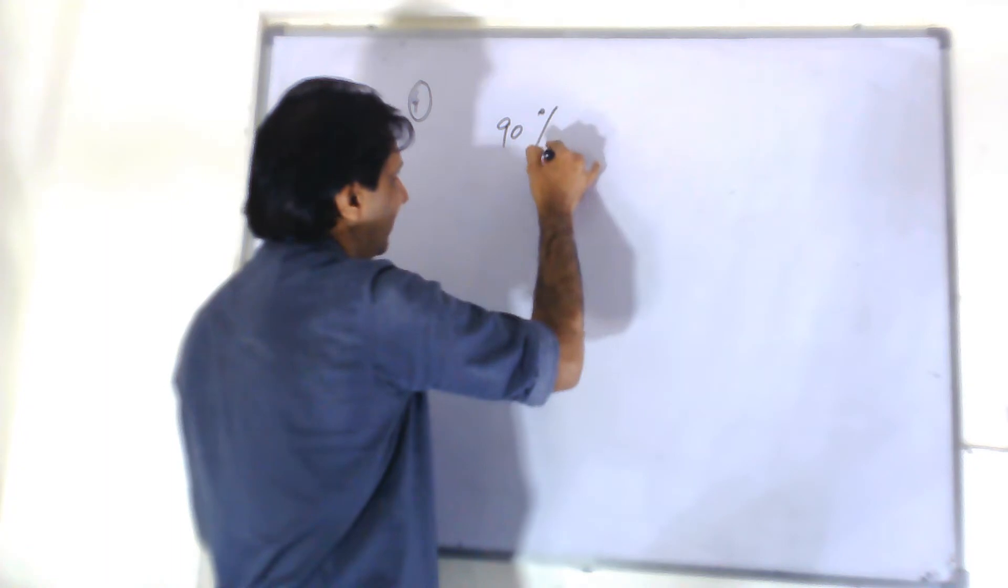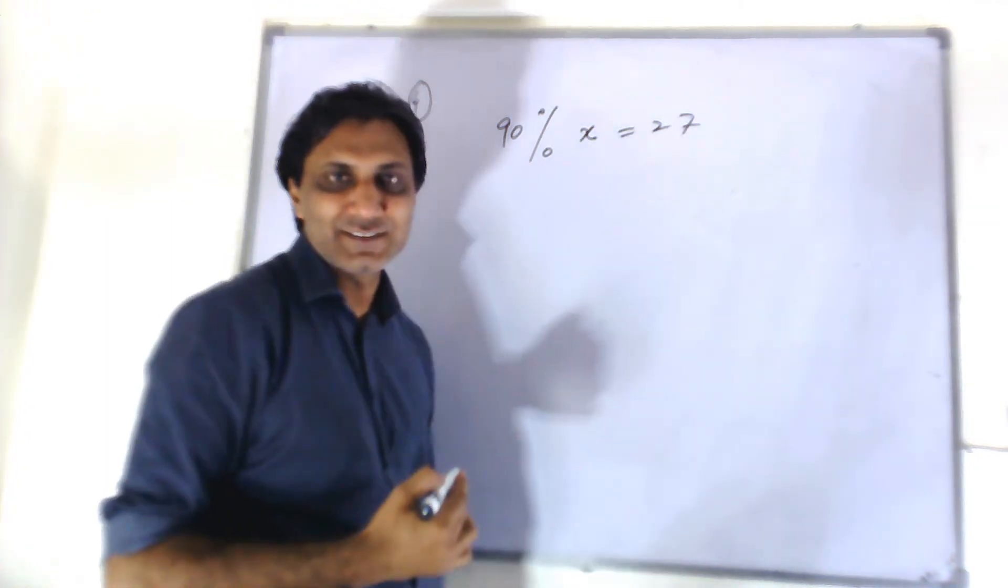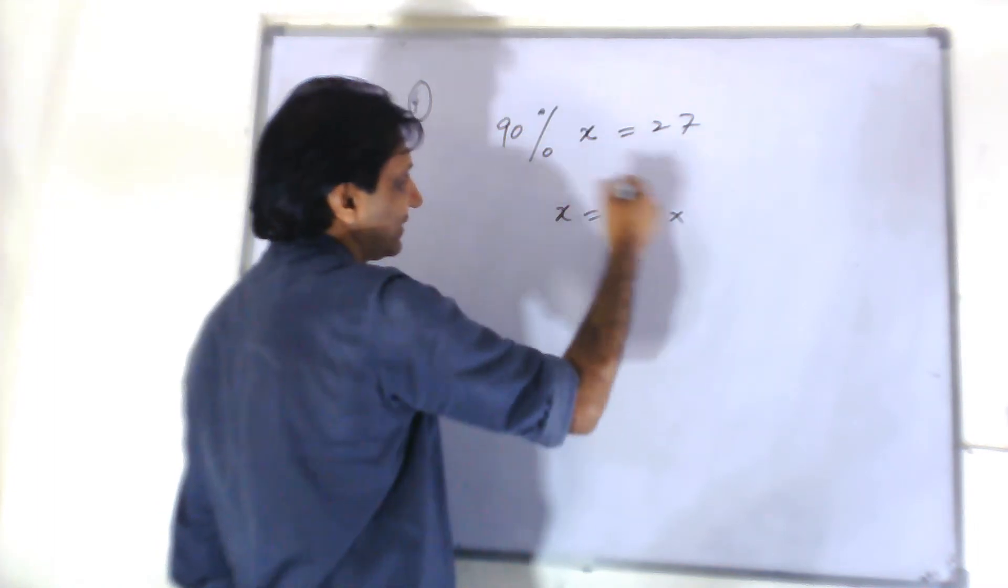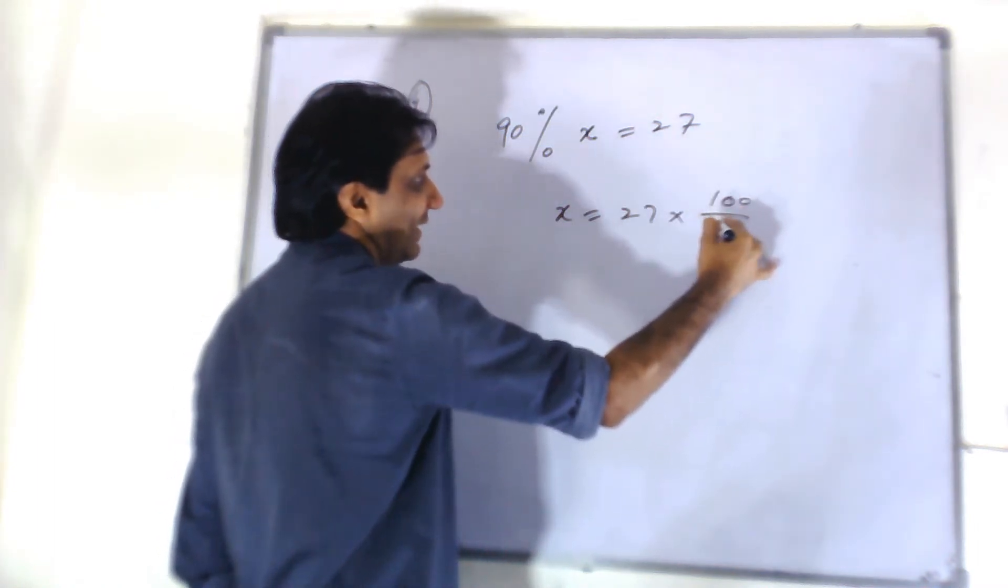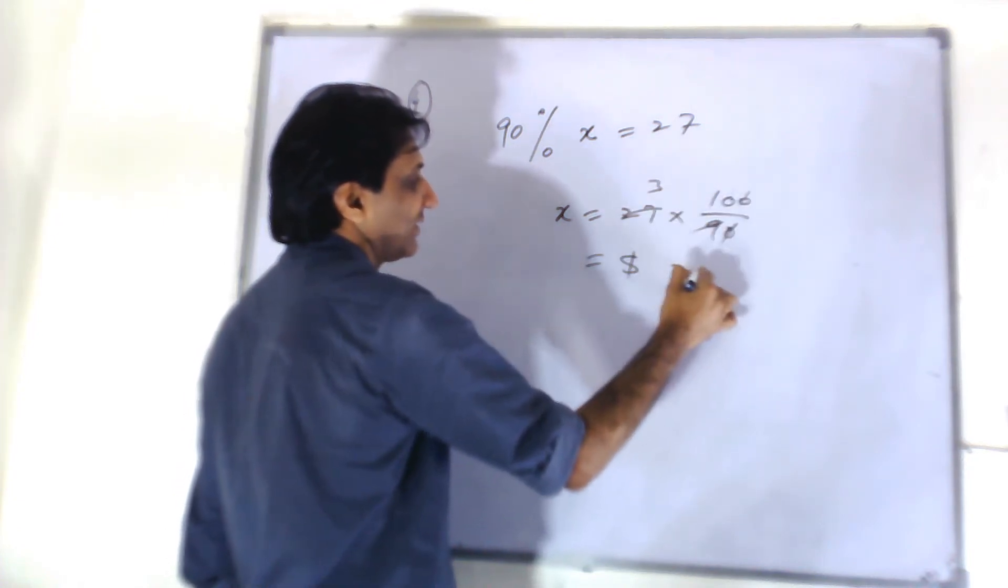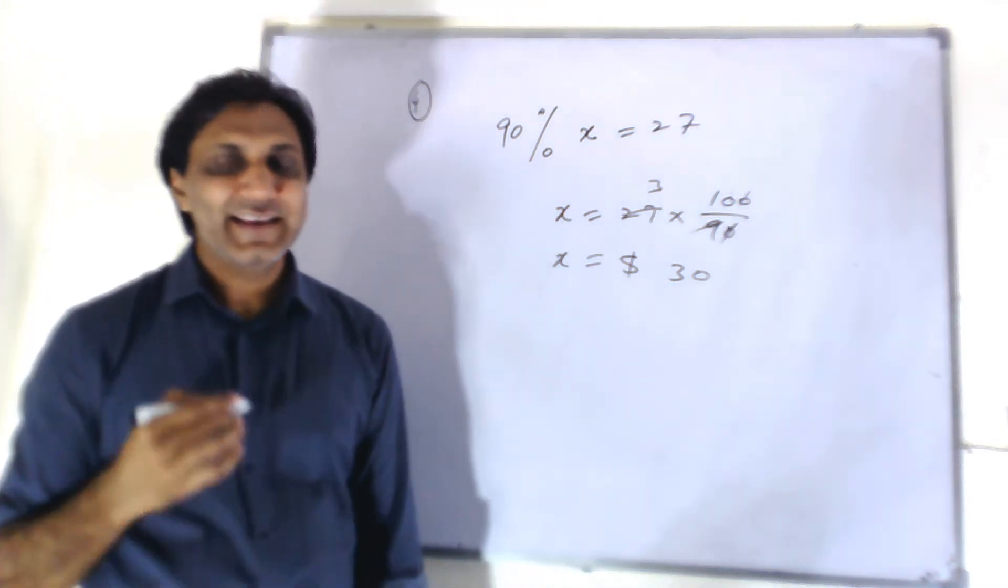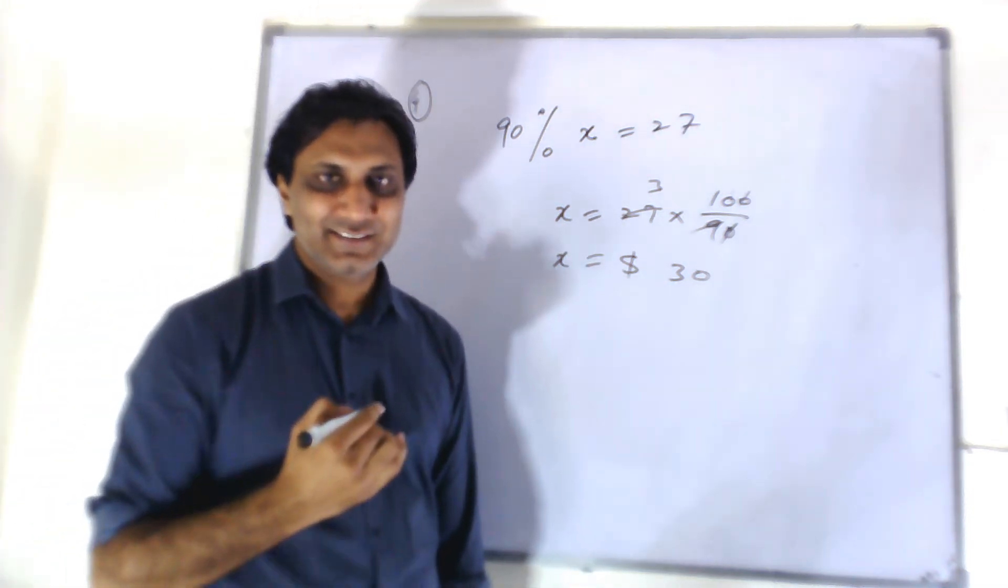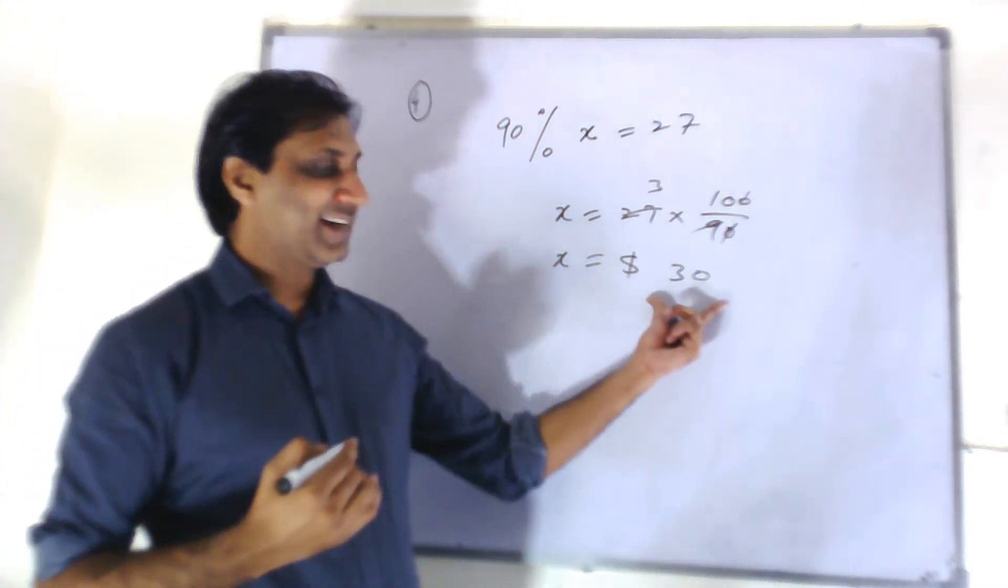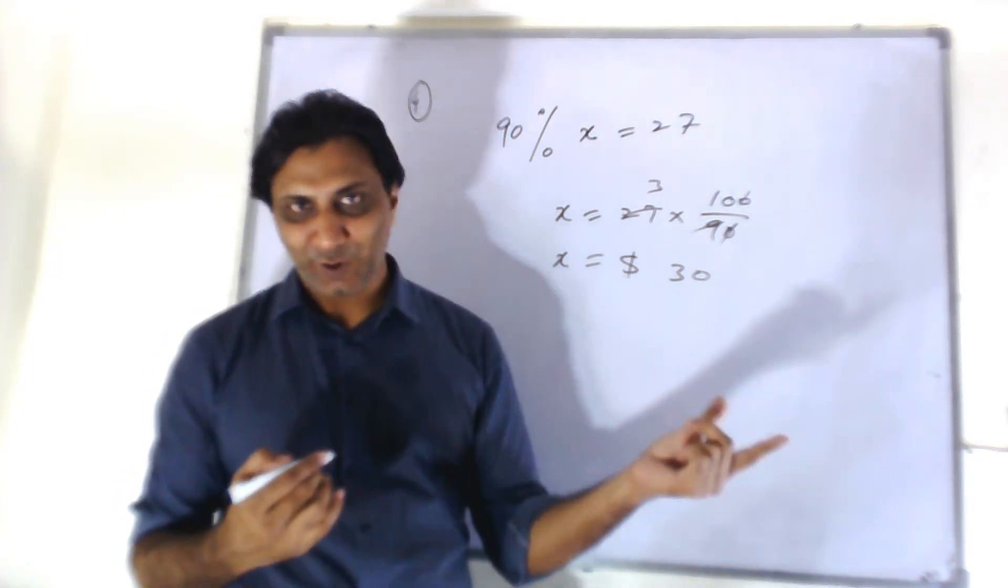90% of actual amount is equal to $27. So the actual amount was 27 times 100 over 90 and that is $30. So it means he collected $30 from customers. So 10% of $30 is $3. He kept $3, $27 he sent away.